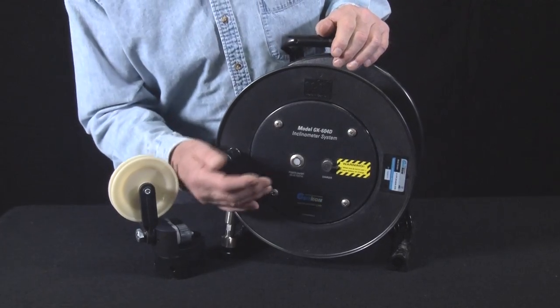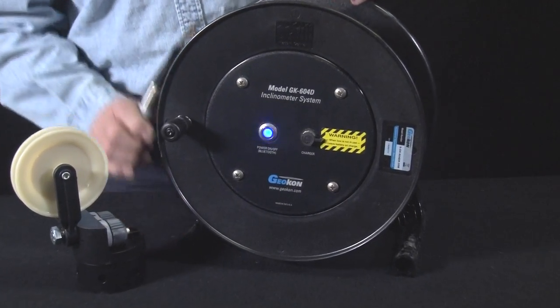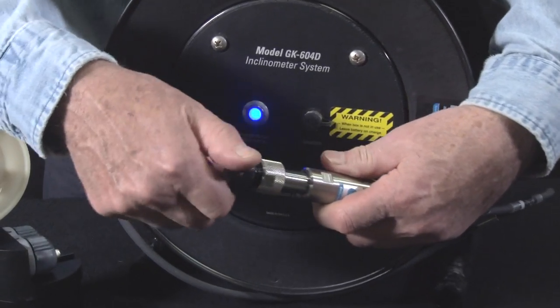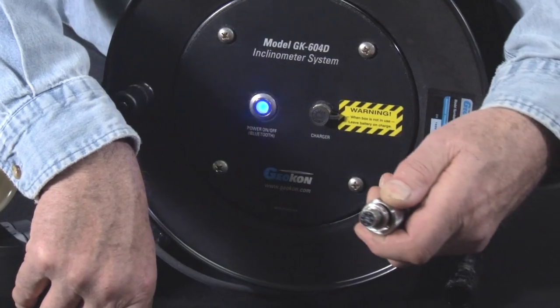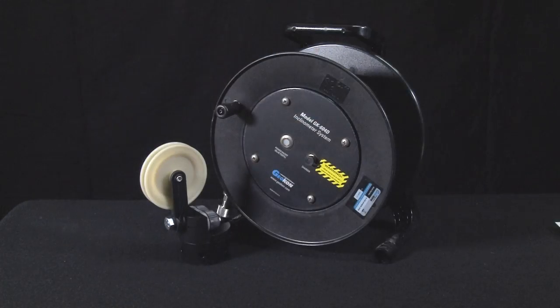The other case contains the reel-mounted control cable which features Bluetooth connectivity with the field PC. The control cable probe connector is protected by an end cap. The reel assembly also has a reel brake. Also shown is the cable pulley assembly.